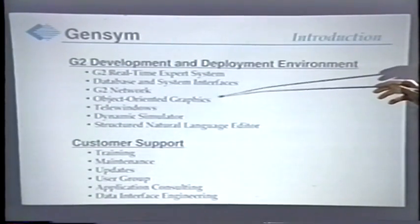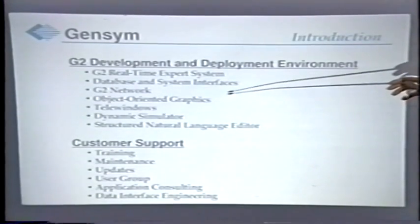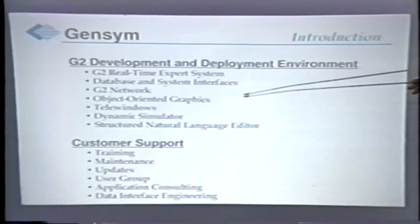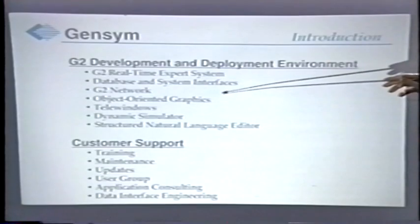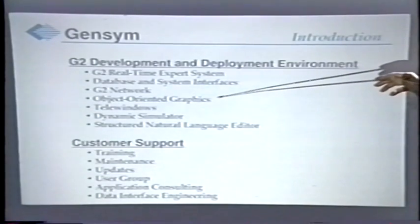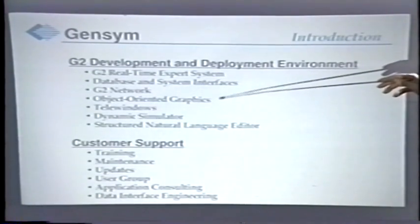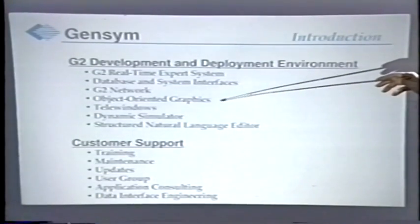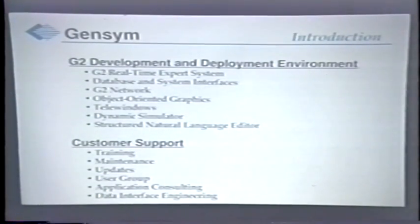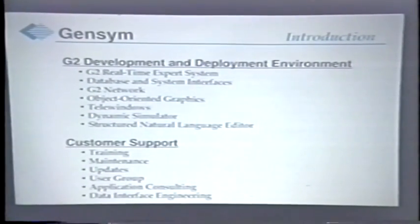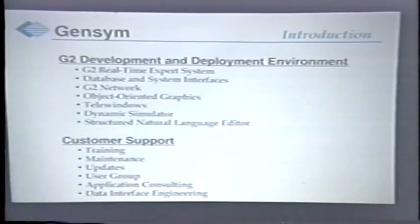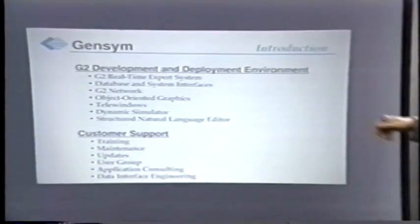G2 is completely object-oriented. This includes the knowledge representation and other aspects, and also includes the graphics. In the applications of G2, the object-oriented graphics allow much of the definition of the application to be done graphically at a very high level.